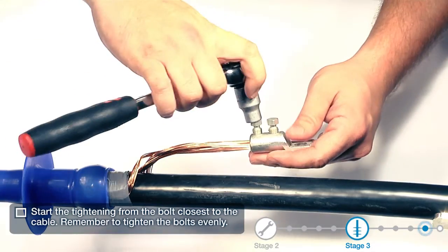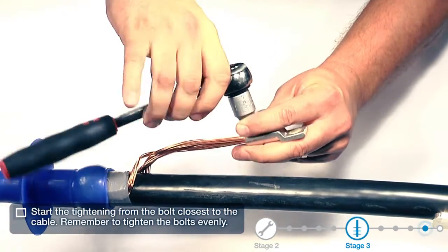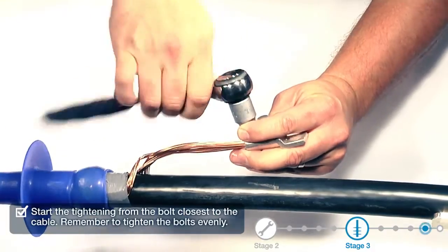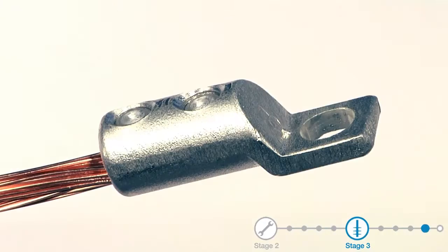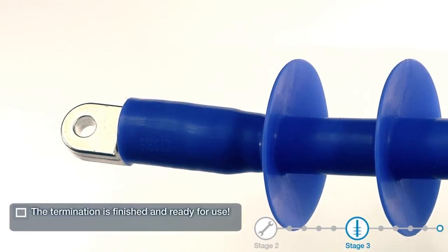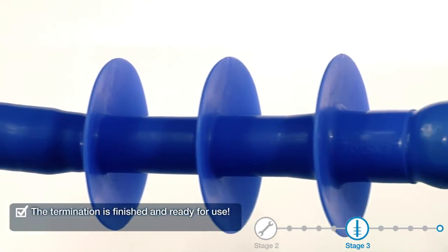Start the tightening from the bolt closest to the cable. Remember to tighten the bolts evenly. The termination is finished and ready for use.